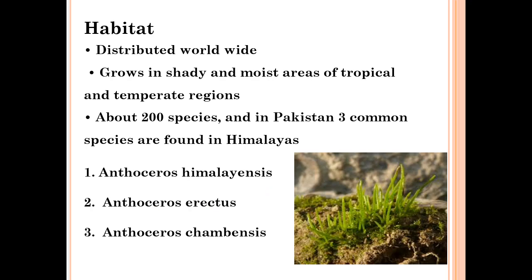Regarding habitat, Anthoceros is distributed worldwide. They have the ability to grow in shady, moist areas of tropical and temperate regions. About 200 species are available, and in Pakistan three common species are found in the Himalayas.